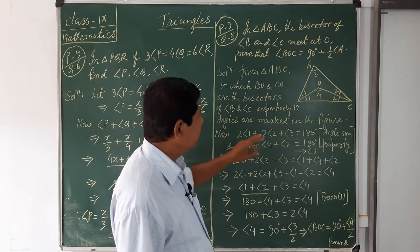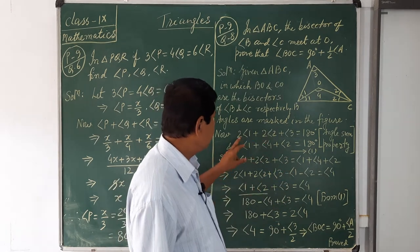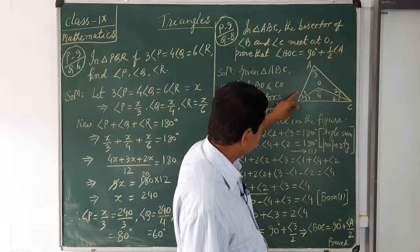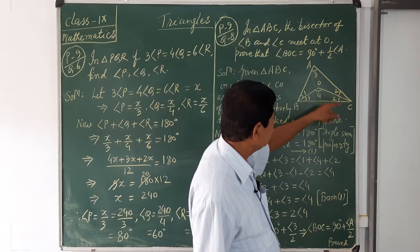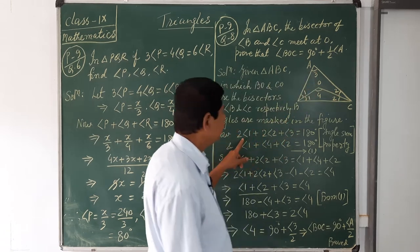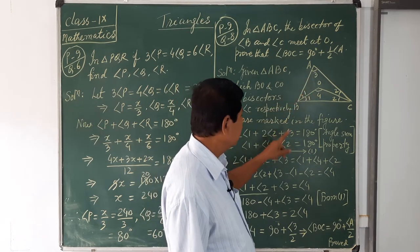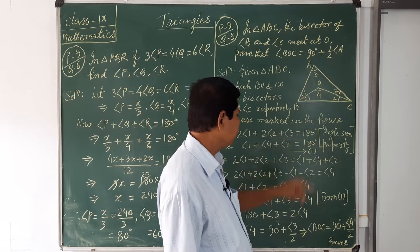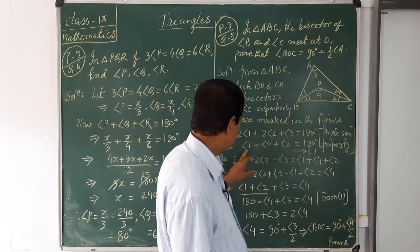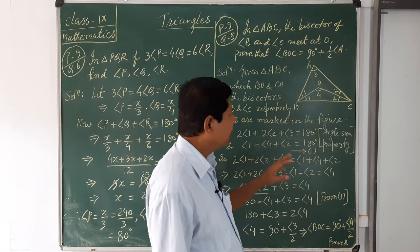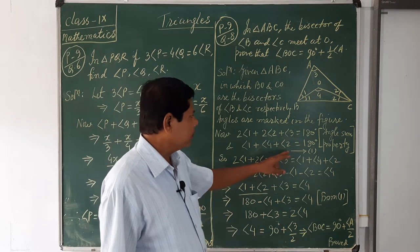Now, consider the complete triangle ABC using the angle sum property: 2∠1 + 2∠2 + ∠3 = 180°, where 2∠1 is the complete angle B, 2∠2 is the complete angle C, and ∠3 is angle A. Again, in triangle BOC, ∠1 + ∠4 + ∠2 = 180° by the angle sum property. Take this as equation number 1.